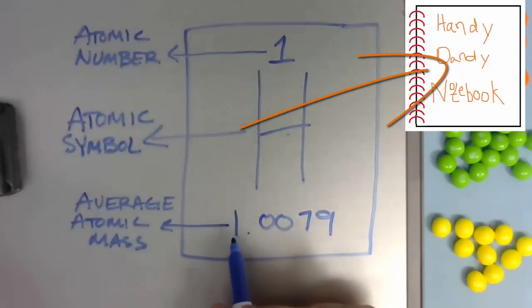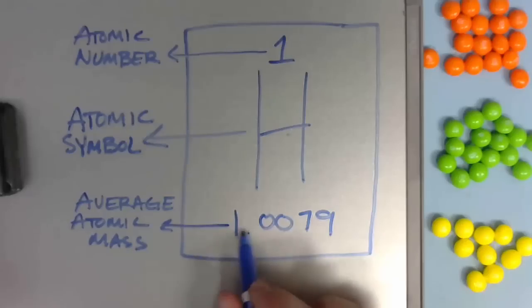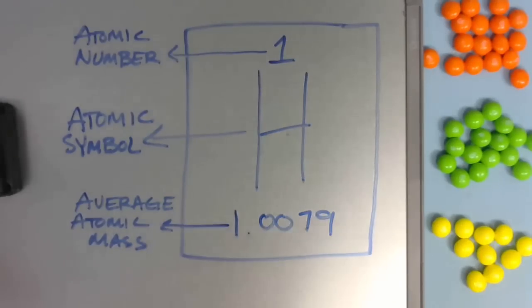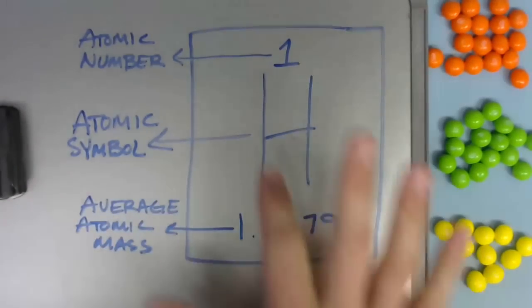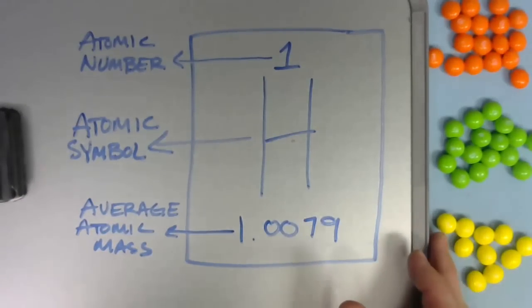The number below it is the average atomic mass. For the purposes of this exercise, though, we're just going to average or round down to the nearest whole number. With that information, you should be able to diagram what a hydrogen atom looks like.